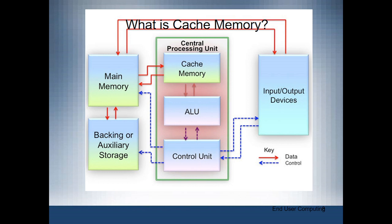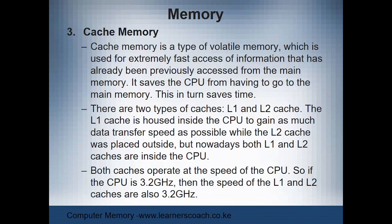Looking at this particular diagram, we can see the difference between the main memory and the cache memory and understand what cache memory is. As we proceed, I want us to carry this diagram so that we know where cache is located in comparison with the main memory. A cache memory is a type of volatile memory — volatile means it loses information — it is temporary, which is used for extremely fast access to information.